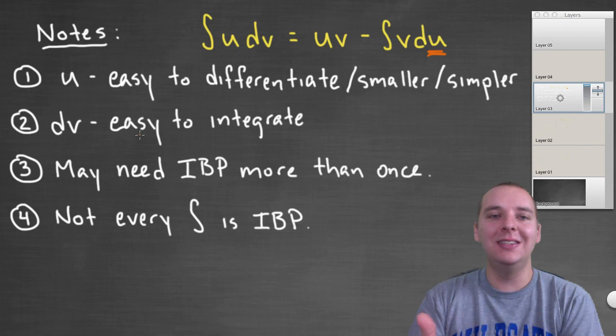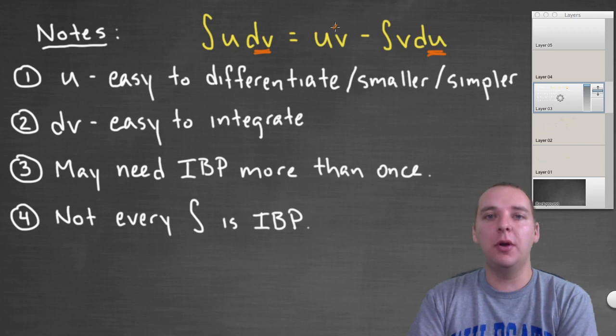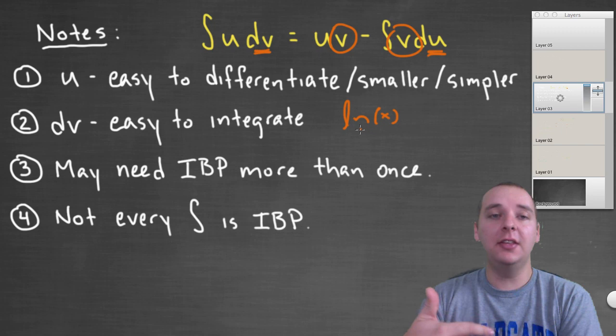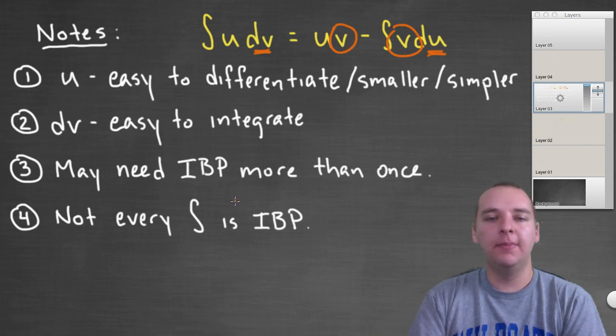dv on the other hand should be easy to integrate. Because if we choose dv in the integration by parts, we don't have any dvs, we have v's. So for instance, dv would never be natural log of x. Why? Because I can take the derivative of natural log of x, one over x, but we rarely ever talk about integrating natural log of x. It's not a very easy or typical integral to do. So that kind of hints at what should be what.